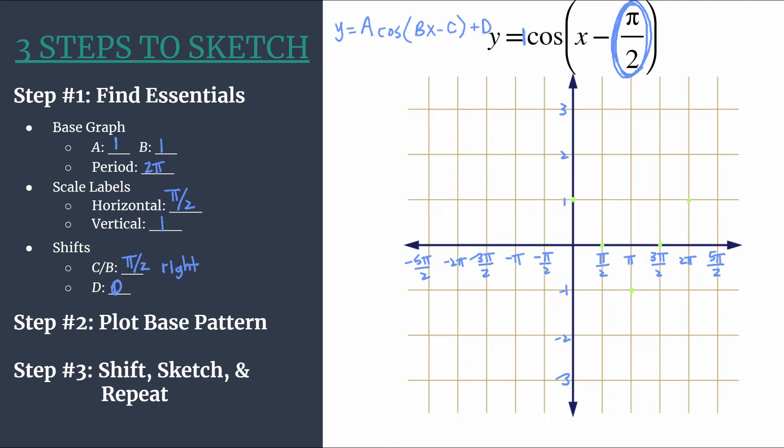So this is our base pattern. Hopefully you see, if you were to sketch in, this would be a cosine curve, and it's just y equals cosine x, actually. But that's not what we want here. We want it to be shifted right by pi over two.